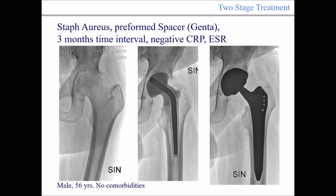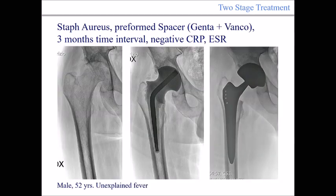Another Staphylococcus case: a preformed spacer with gentamicin, three months time interval, negative CRP and ESR, and we proceeded with the second stage. This was a 56-year-old male with no comorbidities at all.